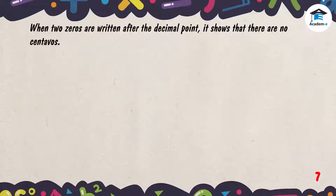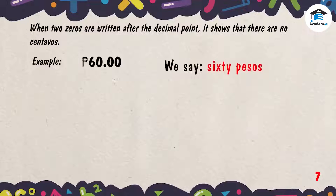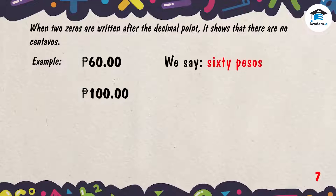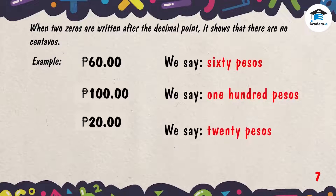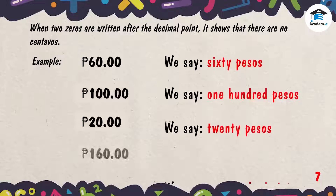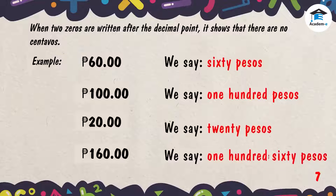When two zeros are written after the decimal point, it shows that there are no centavos. For example: we say 60 pesos. Second example: we say 100 pesos. Third example: we say 20 pesos. Fourth example: we say 160 pesos.